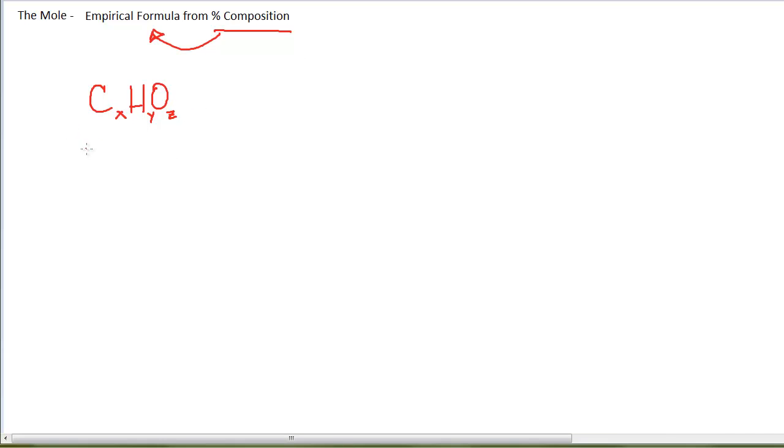So if I'm given a compound that has 39.99% carbon, 6.73% hydrogen, and 53.28% oxygen, that information is the percentage by mass of each of these elements regardless of the sample size.